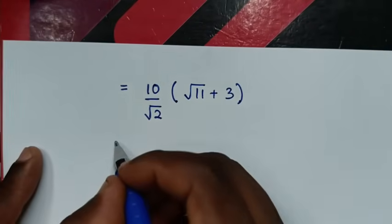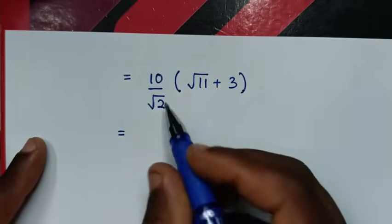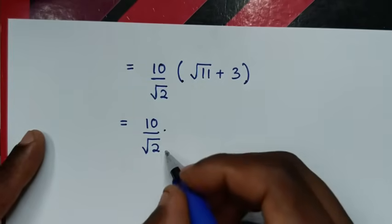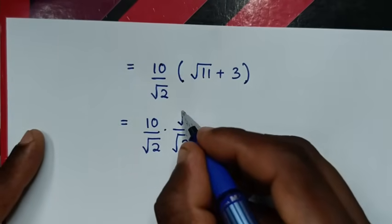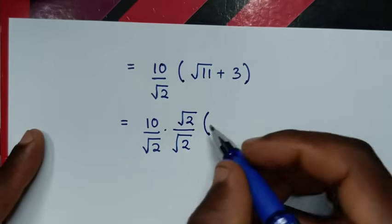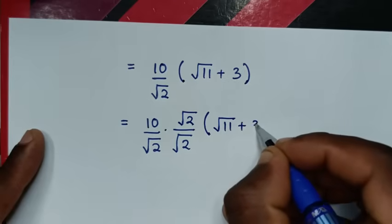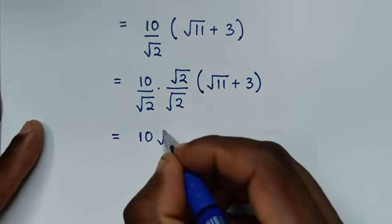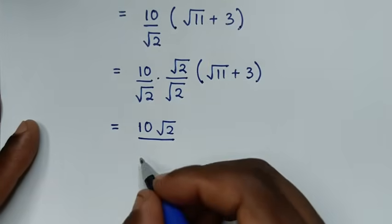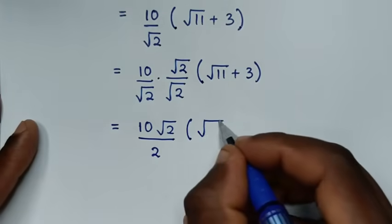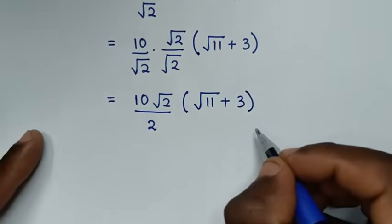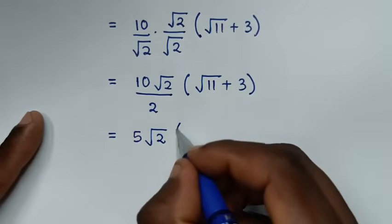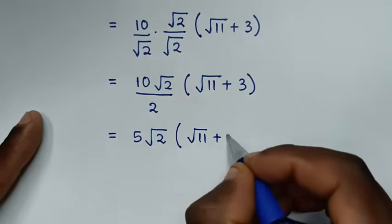We rationalize the remaining denominator by multiplying by square root of 2 over square root of 2. This gives 10 times square root of 2 over (square root of 2 times square root of 2), which is 2, times (square root of 11 plus 3). This simplifies to 5 times square root of 2 times (square root of 11 plus 3).